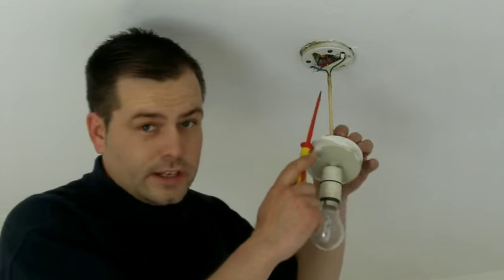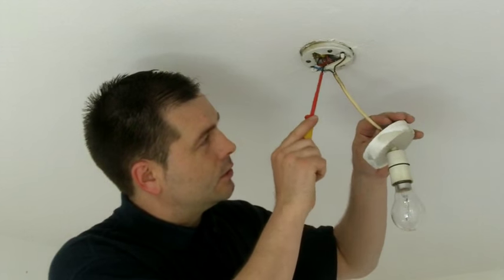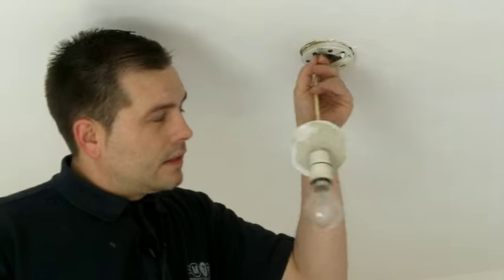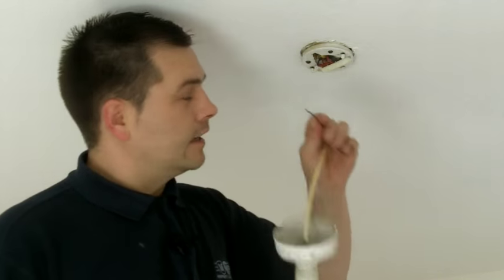You will see that this light fitting is actually connected up wrong. We have a blue joining onto a red cable and we have a brown joining onto a black cable. Now of course an electrical test would have picked this polarity issue up and it shows why it's always important to have an electrical test carried out on your home.